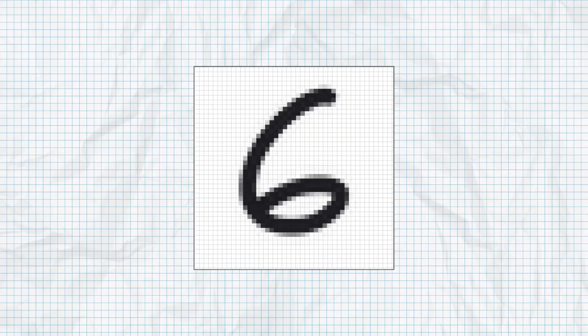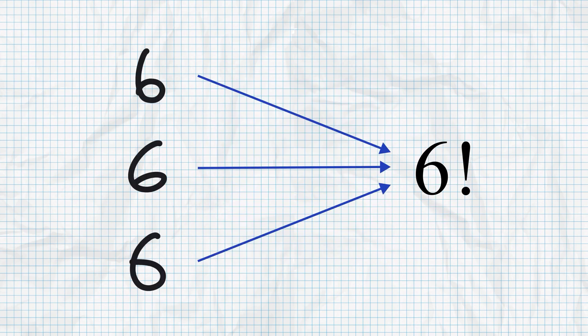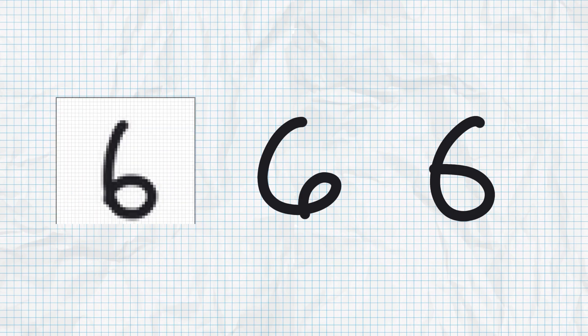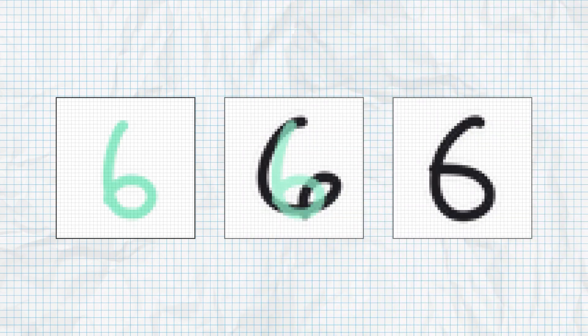Well, to figure that out, we need to think about how a computer would actually see this six. Computers process images as a collection of pixels. Each pixel has a number value that dictates its shade. While you may be able to recognize a six easily, it's not so simple for a computer. Each of these sixes have very different values across each pixel, so it's super difficult to write instructions. You can't just say, oh, these pixels are black, then it's a six — because in this image, not all of those pixels are black, but it's still a six.